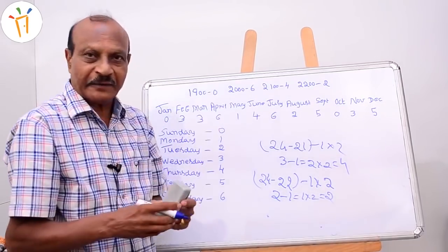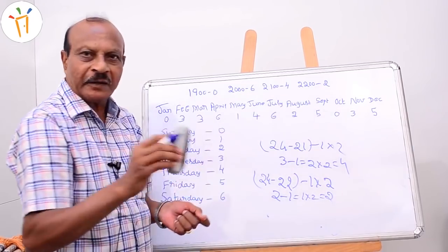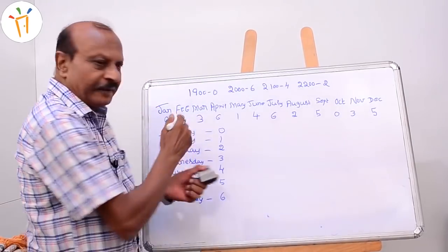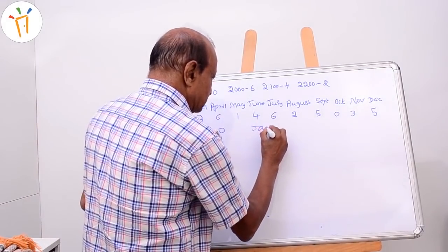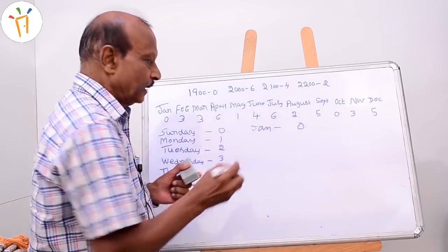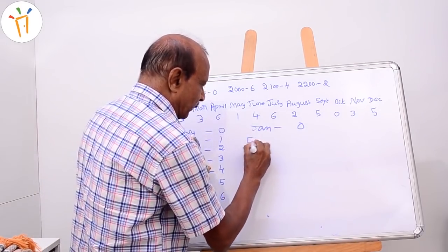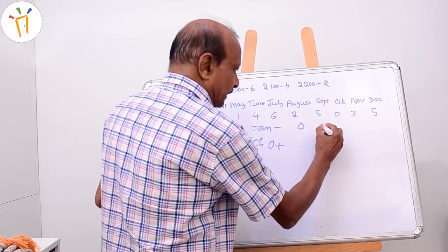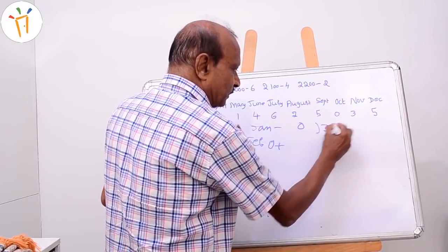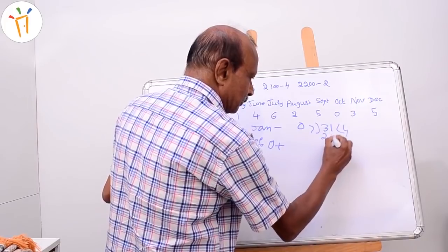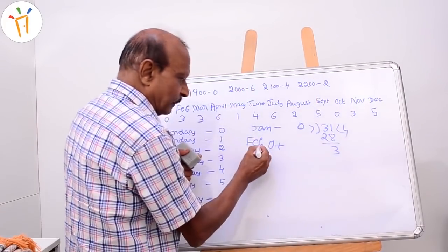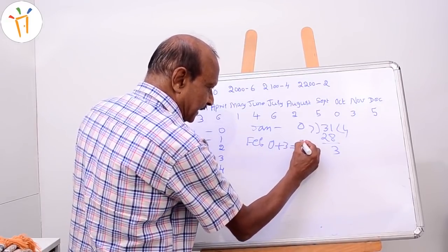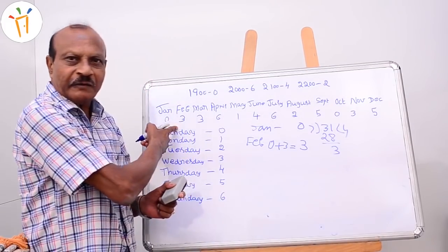Now I will come to the month code numbers and how I derived them. January is given code number 0. To find February: start with January's code 0, then add January's 31 days divided by 7 — remainder is 3. So 0 plus 3 equals 3. February's code number is 3.